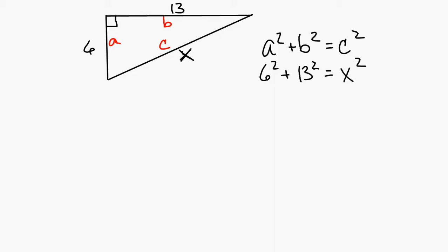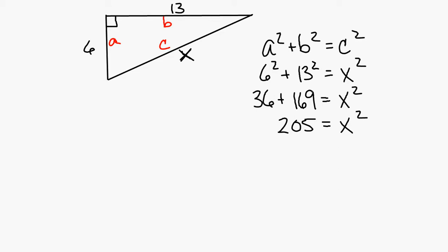Square everything: 6 squared is 36, plus 13 squared is 169, equals X squared. Add 36 to 169, so 205 equals X squared. In order to remove the exponent from X, since it's raised to the second power, you square root both sides of the equal sign. So the square root of 205, if you push the square root button on your calculator, gives you 14.3 equal to X.